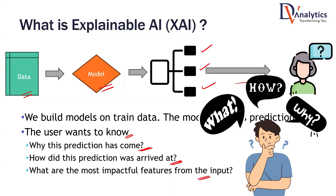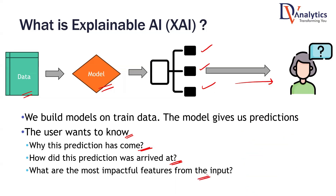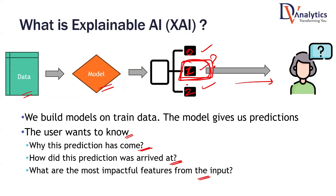What are the most impactful factors from the input that caused this predicted value? For example, zero, one, two are possible predictions, and we got the predicted value as one. Why was this predicted as one? I'm talking about one data point — one user gave one data point, and this data point was predicted as class one. Why was it not class zero or class two? What are the influential factors that are impacting this predicted value?